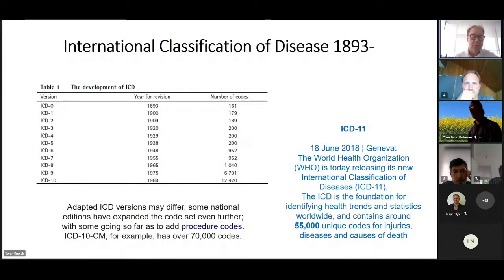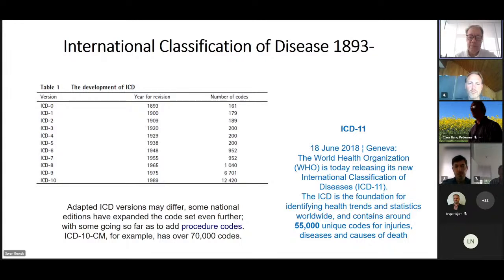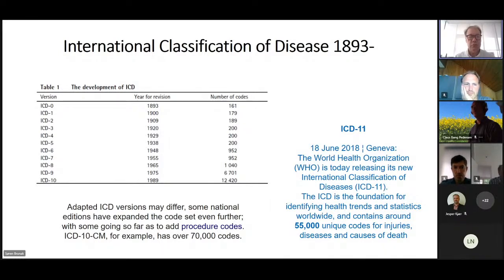In ICD we have more and more codes over time — it started as a causes-of-death system. Soon we will be looking at ICD-11, which may have more than 50,000 codes, becoming more and more fine-grained. Our efforts are also to try to condense some of this. ICD is also used for payment in healthcare, so it doesn't necessarily reflect disease etiology and mechanistic aspects.